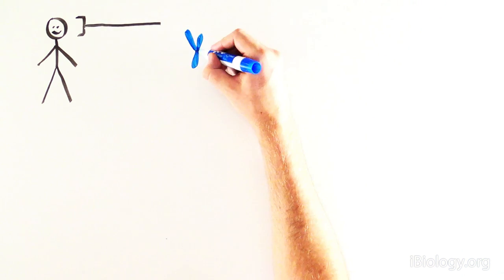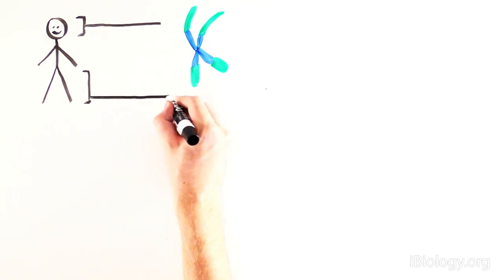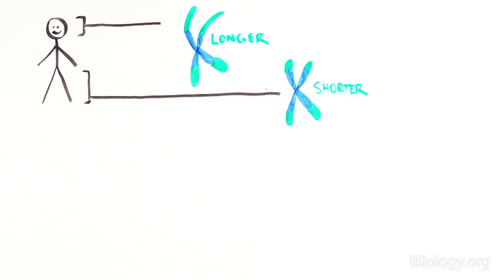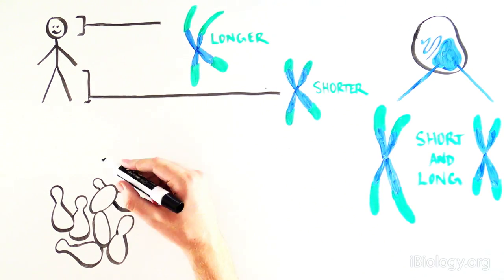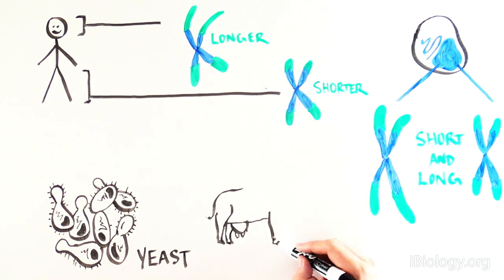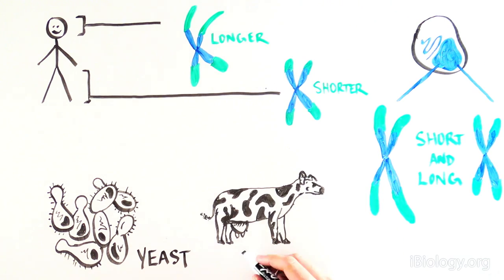But what was also curious was that the telomeres differed in length within one individual, and even within one cell. The fact that all of these organisms had the same conserved sequence at the ends of chromosomes suggested that the telomere was very important.